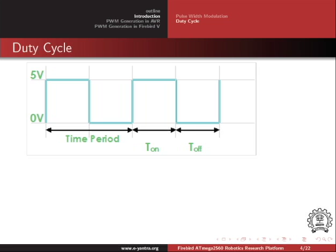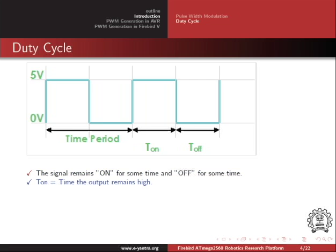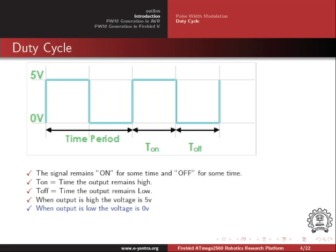Here we can see a signal in the form of pulses. The signal is on for a certain period of time and off for a certain period of time. The time period for which the signal is high is called the on period or T-on. The time period for which the signal is low is called the off period or T-off. When the output is high, the voltage is 5 volts; when the output is low, the voltage is 0 volts. The total time period over one cycle is the sum of T-on and T-off. Another term used to tell us about the on and off time of a signal is the duty cycle.